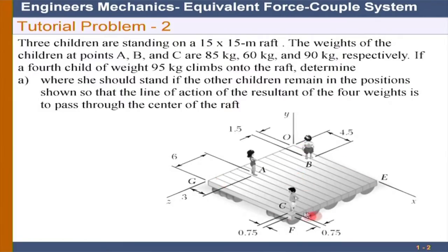Now we will move to the next problem. The problem involves a raft which is floating on water and three children are standing. Three children with weights for A, B, and C are 85 kg, 60 kg, and 90 kg respectively. A fourth child of weight 95 kg climbs onto the raft. What is being asked is: determine where that child should stand if the other children remain in the positions shown, so that the line of action of the resultant of the 4 weights is to pass through the center of the raft. Ultimately, in this problem, the unknown is the location of the fourth child on the raft.